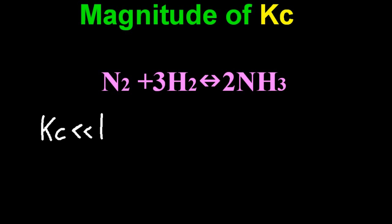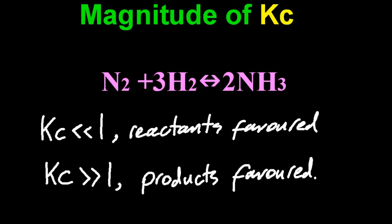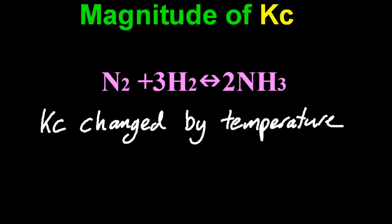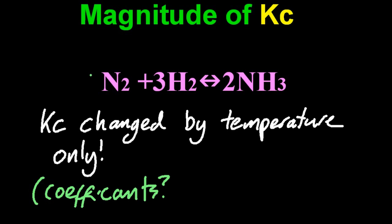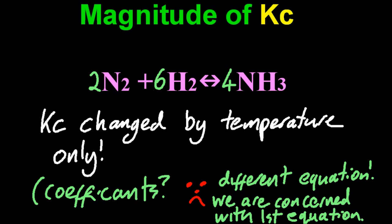If Kc is much smaller than one, then the reactants are favoured. And if it's much bigger than one, the products are favoured. You just have to use your common sense about what bigger and smaller than one means. So the only thing that changes Kc is temperature. What about the coefficients? If you change the coefficients for that reaction, that changes Kc — but you've just changed to a different equation. That's why Kc changed. Assuming the coefficients remain unchanged, the only thing that changes Kc is temperature.